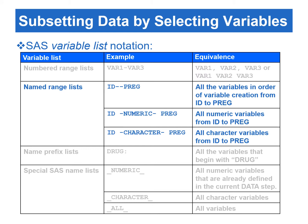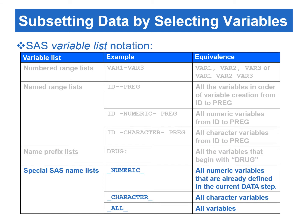To use named range lists, we need to know the creation order of the data set, which can be found via the VARNUM option from PROC CONTENTS. For example, id double-dash preg refers to all the variables between id and preg based on variable creation order. Name prefix refers to all the variables that begin with a specified character string. For example, drug colon refers to all the variables that begin with the character string 'drug'. Lastly, special SAS names use special SAS names: _NUMERIC_, _CHARACTER_, and _ALL_, which refer to all numeric, character, or all variables already defined in the current data step, respectively.